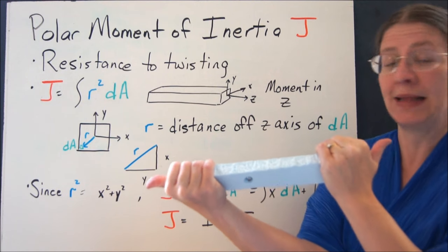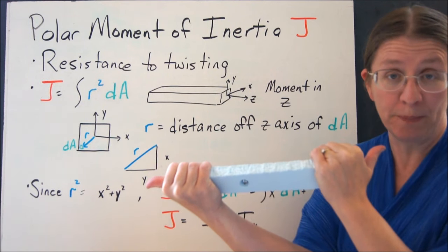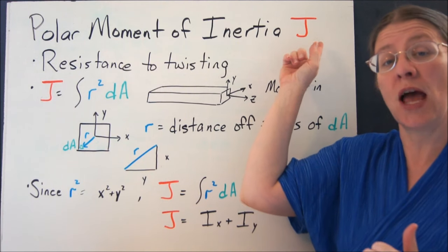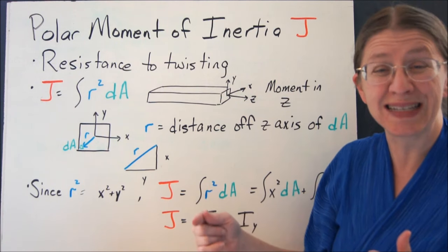Now if you put a moment about this beam about the z-axis, what you're doing is twisting the beam. The polar moment of inertia, which we call J, measures resistance to twisting in a beam.